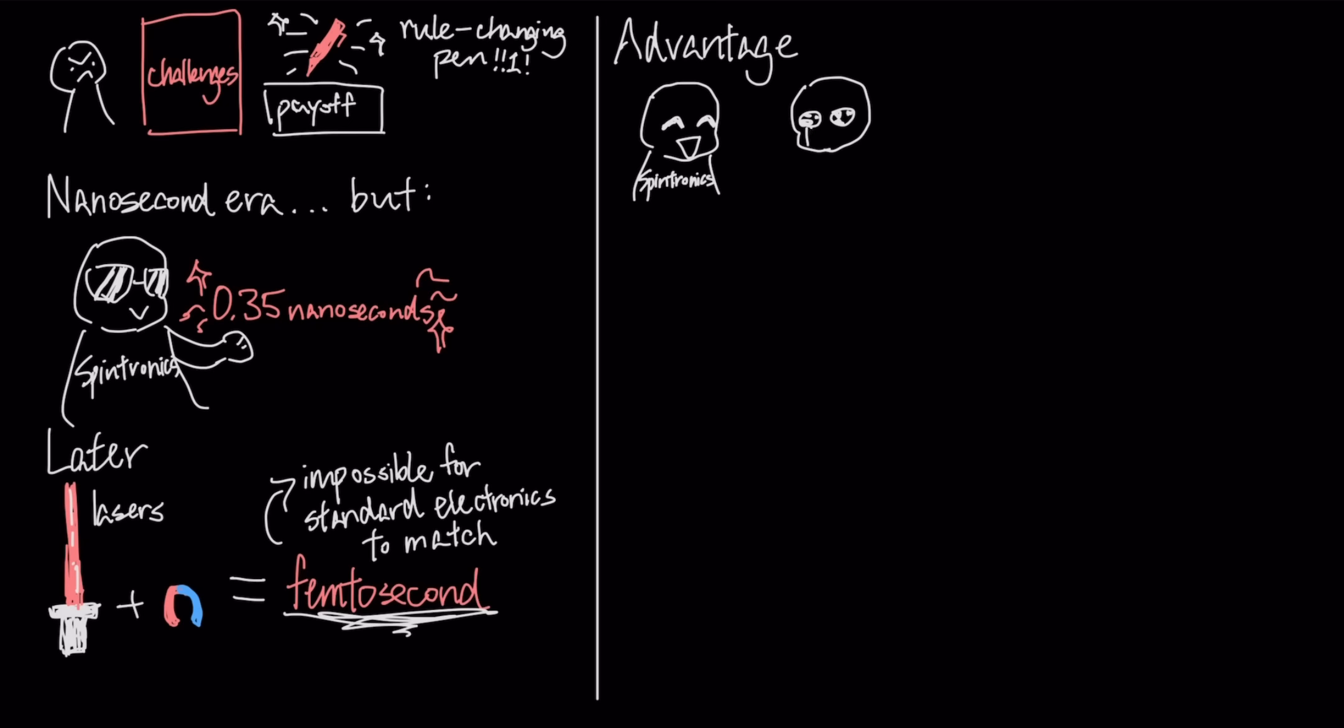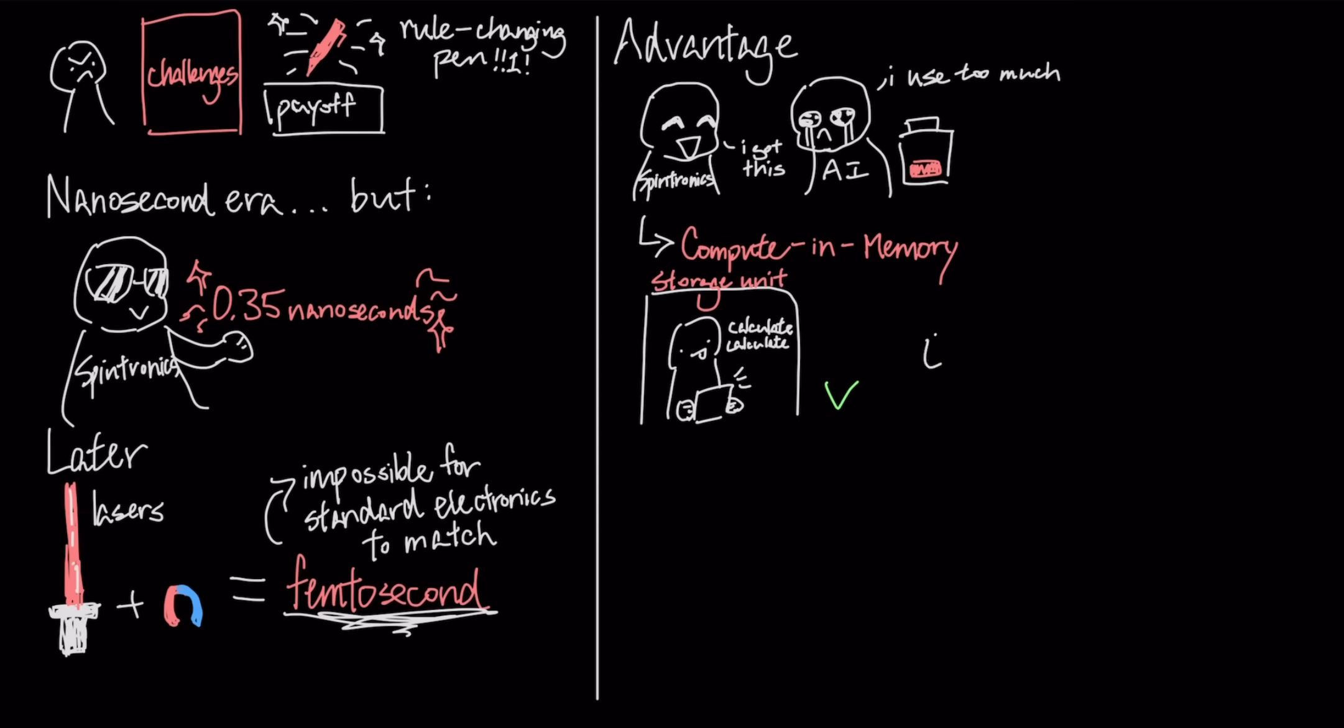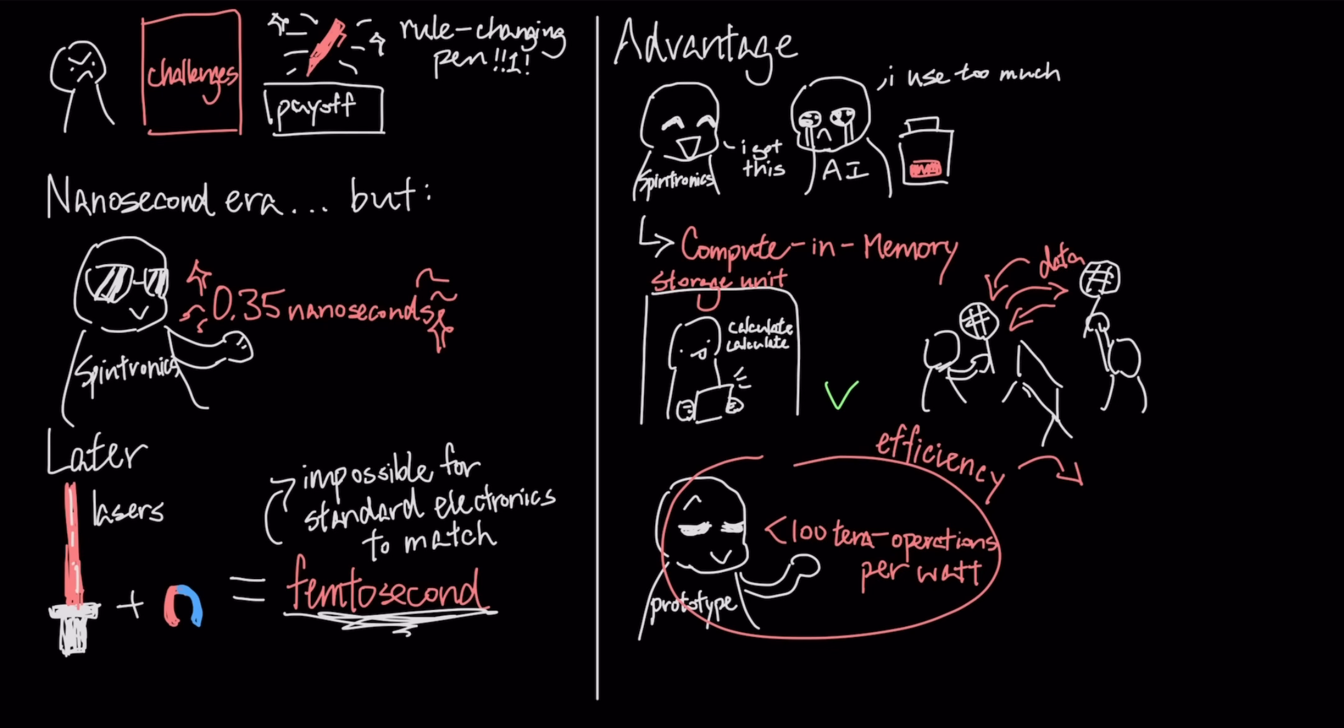The defining advantage of this technology is its potential to address the power constraints of modern artificial intelligence through an architecture called compute-in-memory, where the chip performs calculations right inside the storage unit instead of wasting energy shuffling data back and forth. With prototypes surpassing 100 tera operations per watt, we are approaching the efficiency required to deploy large language models on mobile devices, independent of massive data centers.